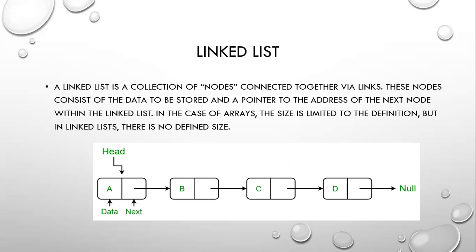Linked lists are broadly classified into three types: single linked list, double linked list, and circular linked list. A separate video will be made about linked lists in detail. Just understand the basic concept here: linked list is a collection of nodes — node one, second node, third node, fourth node. The data items are A, B, C, D. In the first node we store the address of the B node, in the B node we store the address of C, in C we store the address of D, and in D we store null because it is not pointing to any other node. The head node stores the address of the first node.